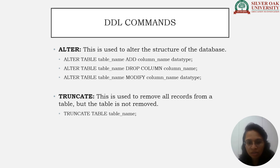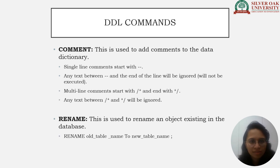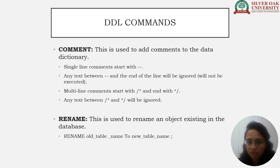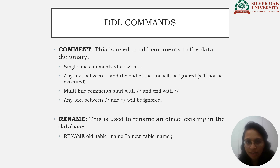The next DDL command is TRUNCATE, which is used to remove all records from a table but the table itself is not removed. The syntax is TRUNCATE TABLE table_name. The COMMENT command is used to add comments to the data dictionary. A single-line comment starts with double hyphen (--) while a multi-line comment starts with slash-asterisk (/* ... */). Any text within these comment markers will be ignored and not executed.